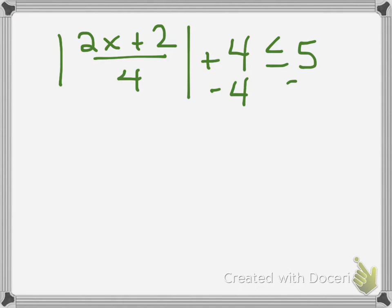Isolate the absolute value by subtracting 4 from both sides of the inequality. Then you have the absolute value of 2x plus 2, all divided by 4, is less than or equal to 1.